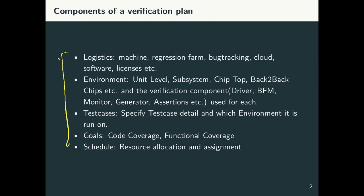The first component is logistic. When we speak of logistic, we are basically speaking of what is it that we require in order to even get started. You might require a special kind of machine. You might want access to a regression farm for running our regressions. We need to specify what our bug tracking system is. If there is any cloud-based infrastructure required, we need to specify that. We need to specify what softwares are required, what licenses we need to acquire, and so on. This logistic part is more on getting everything ready for starting our verification process.